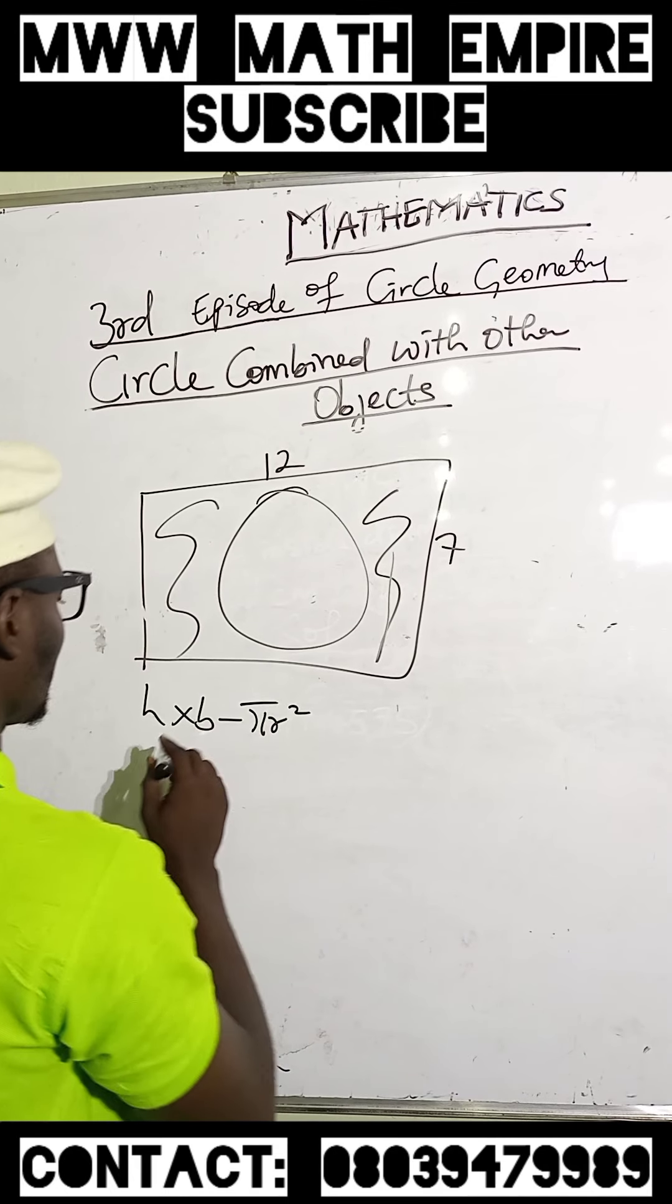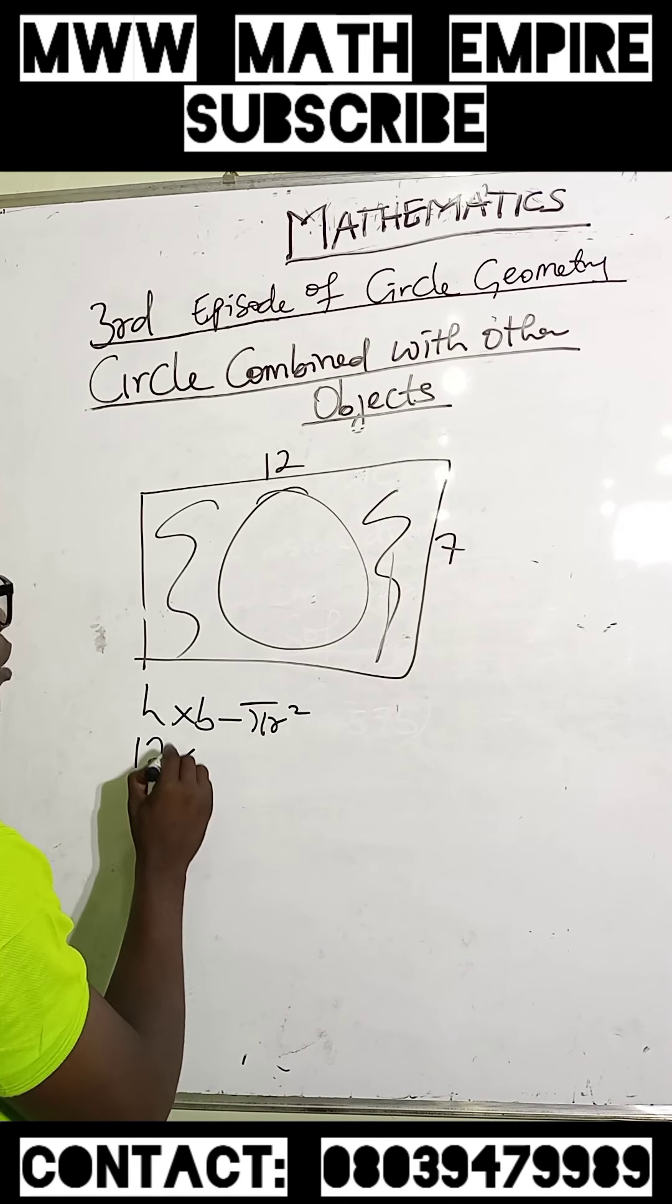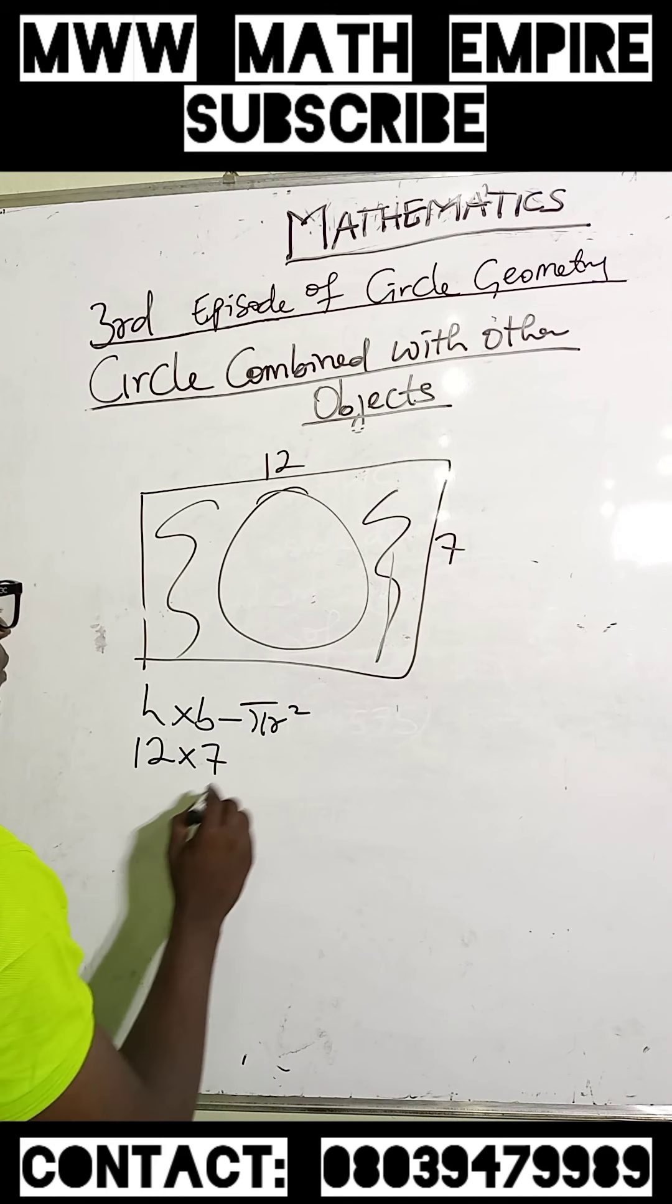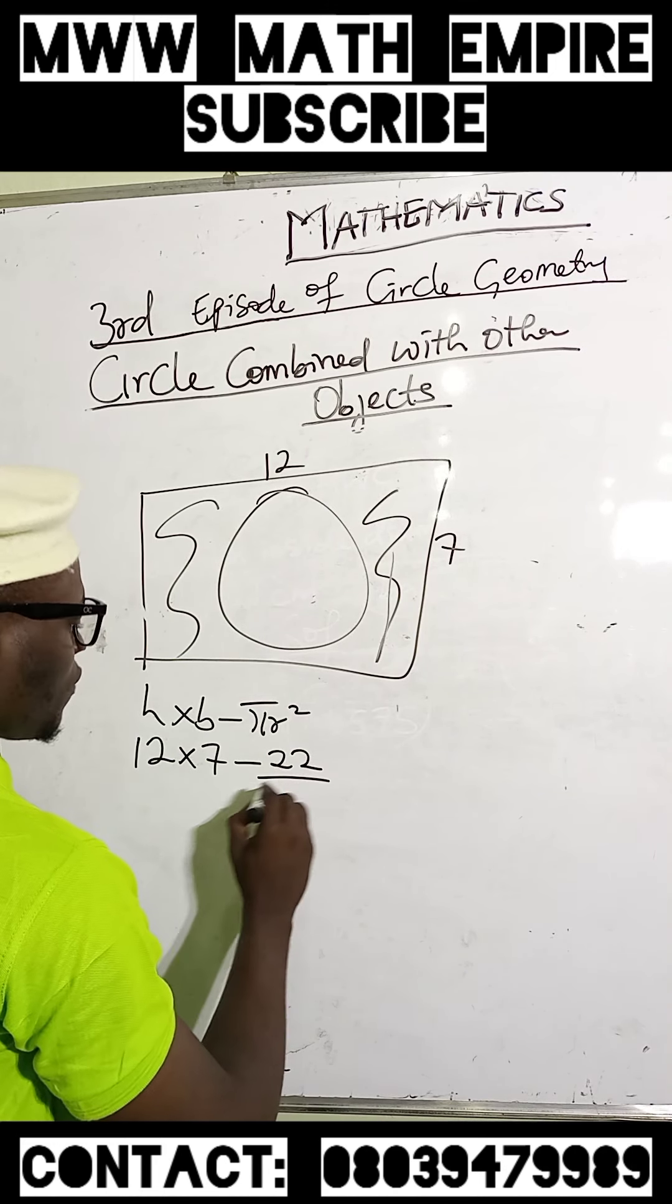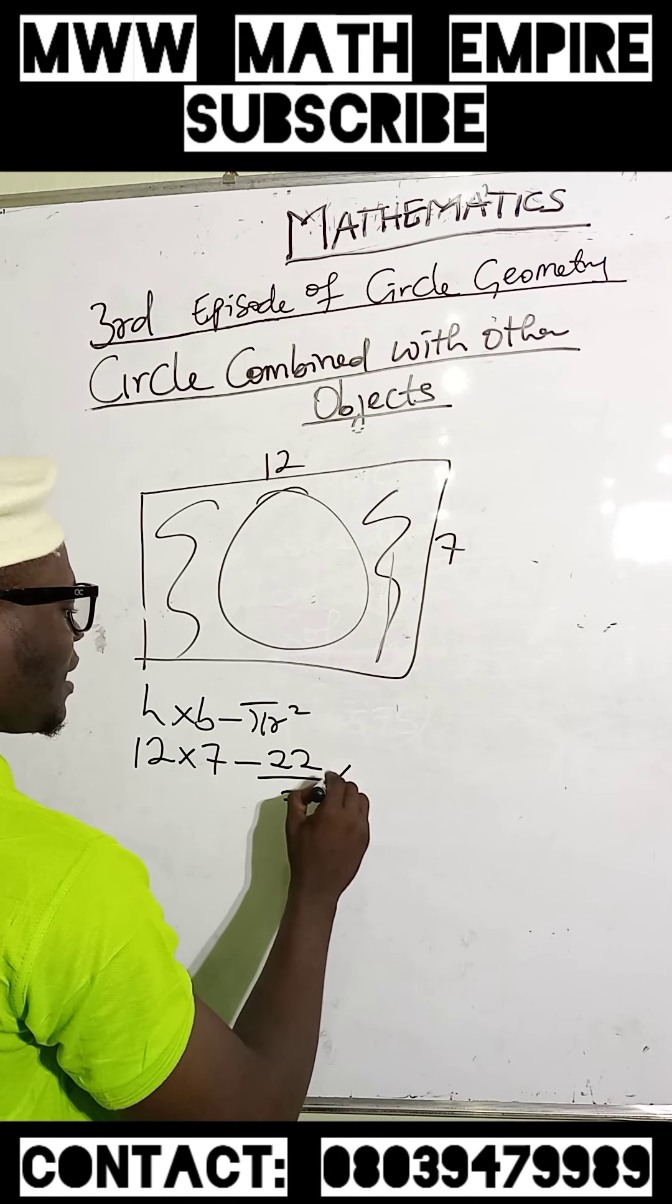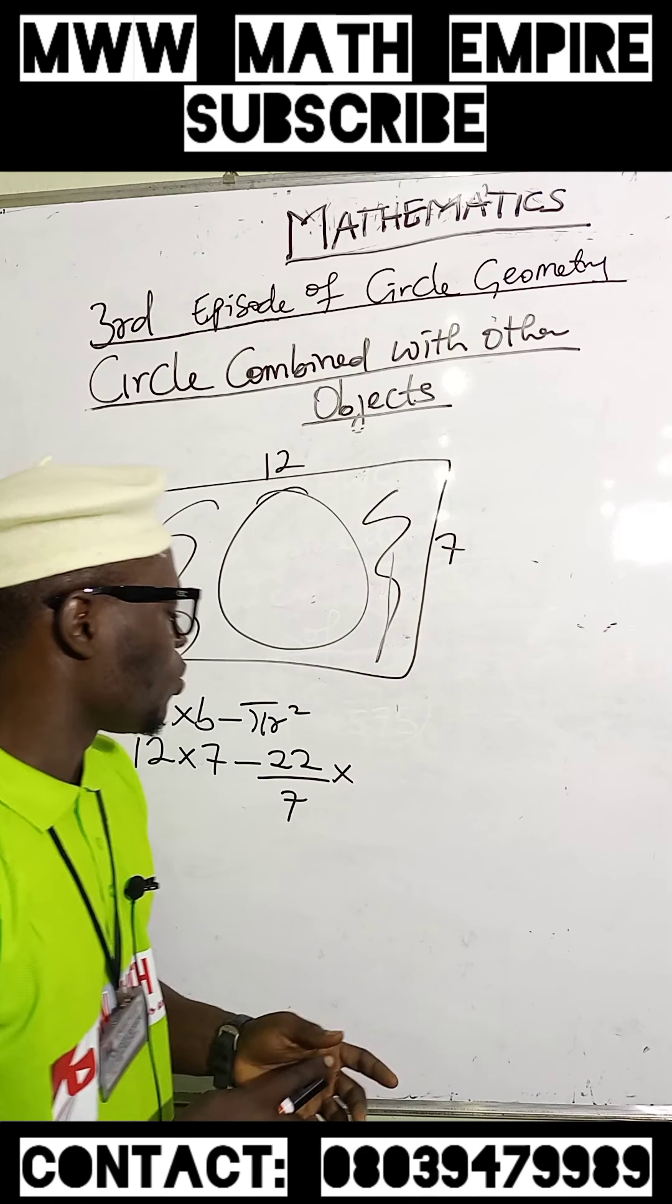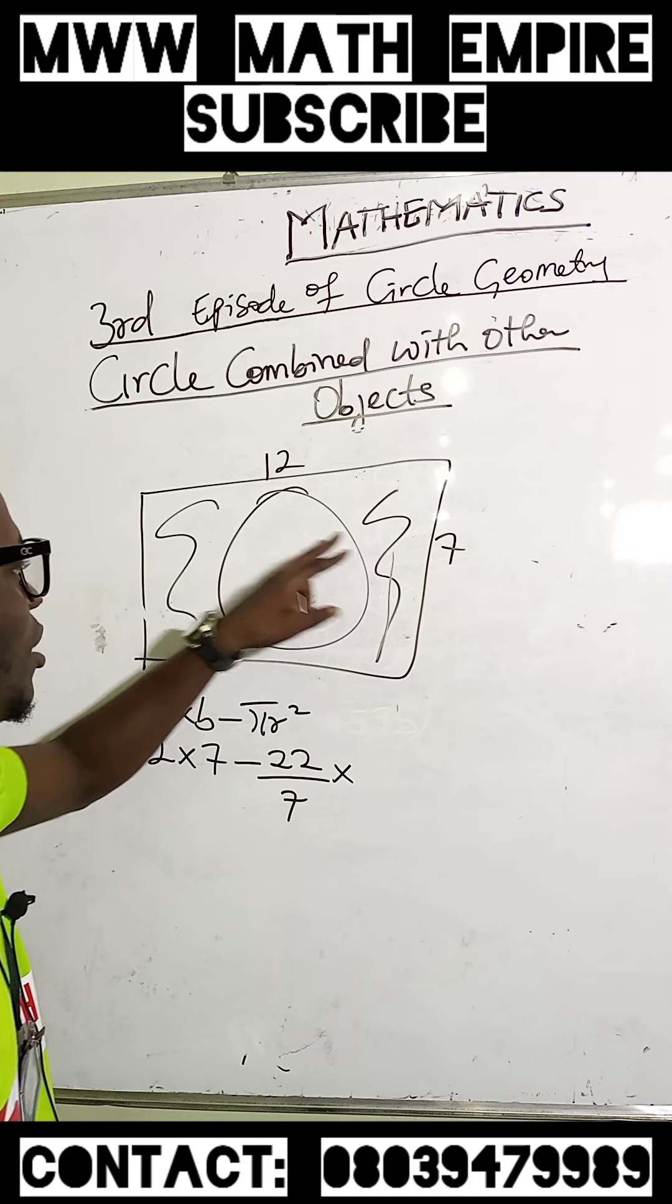At this moment, we have 12 multiplied by 7, then minus 22 over 7 times R squared. Now, there is something we cannot just write. We cannot just write 7.